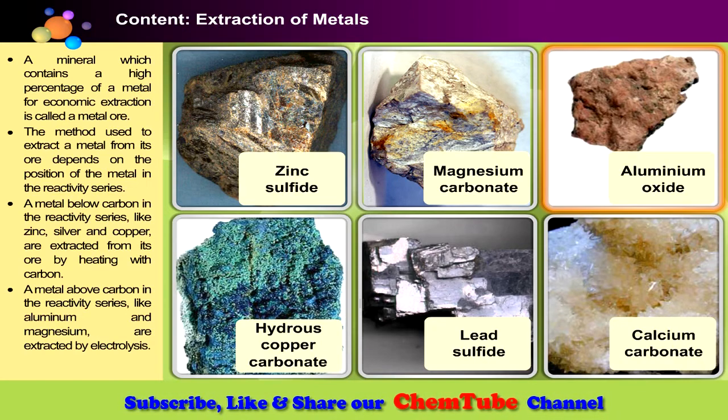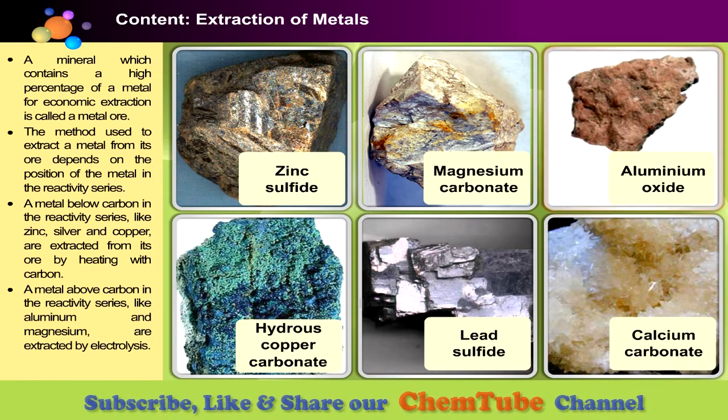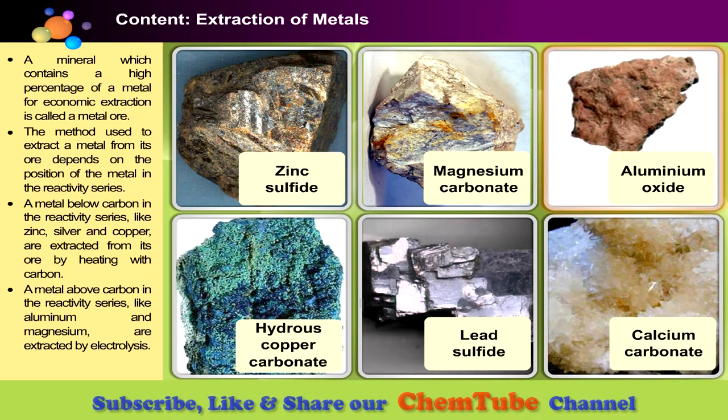A metal above carbon in the reactivity series, like aluminium and magnesium, is extracted by electrolysis. This is bauxite. Bauxite contains aluminium oxide, and aluminium can be extracted from bauxite through electrolysis.